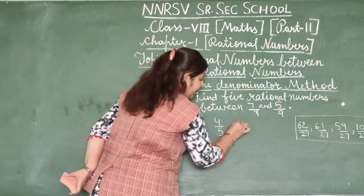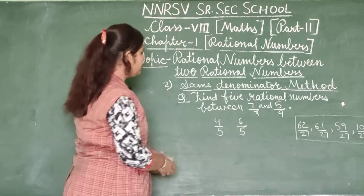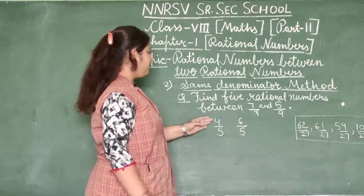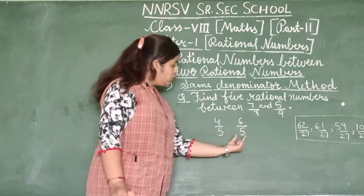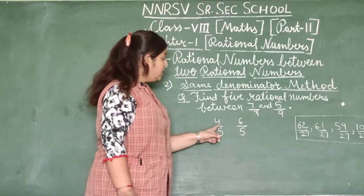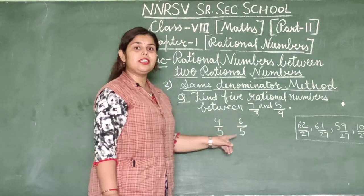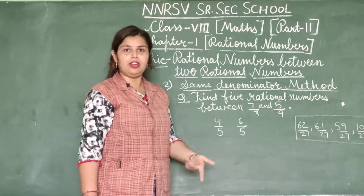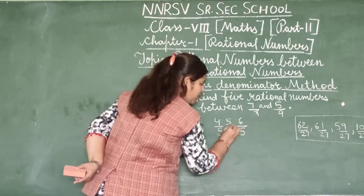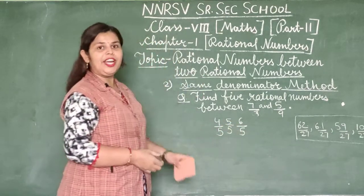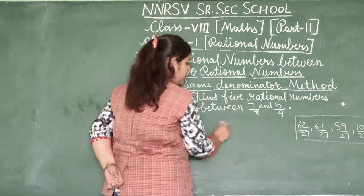Sometimes a problem asks you to find 5 rational numbers between numbers like 4/5 and 6/5. With the same denominator, we look between 4 and 6, but there is only one integer in between, which is 5, giving 5/5. So we cannot directly find 5 rational numbers this way.